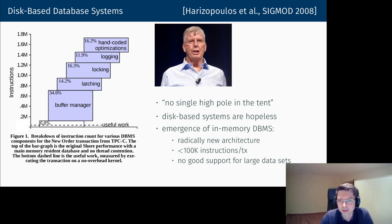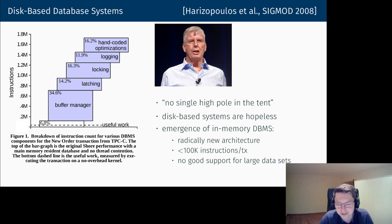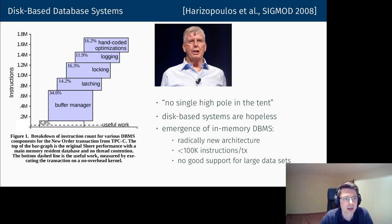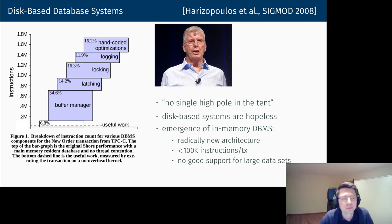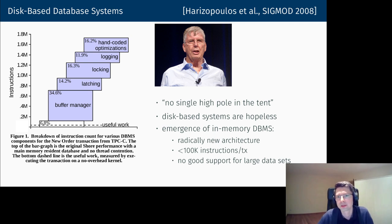The conclusion was that these disk-based systems are really hopeless, which led to the emergence of in-memory database systems. I spent my scientific youth on HyPer, and Andy worked on H-Store. These systems have radically new architectures — as a rough number, a traditional system like Shore requires about 1.7 million instructions for one new-order transaction, while in-memory systems use less than 100,000 — more than one order of magnitude lower, with better scalability.